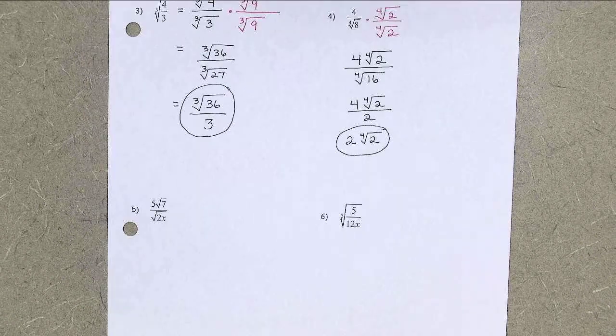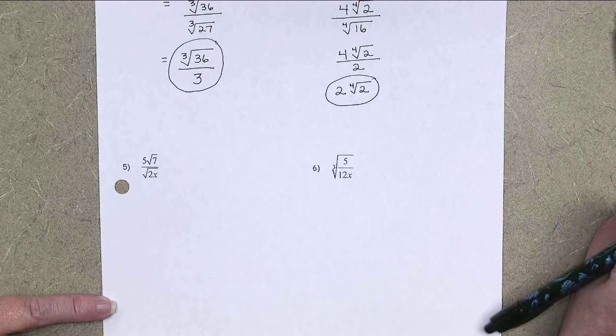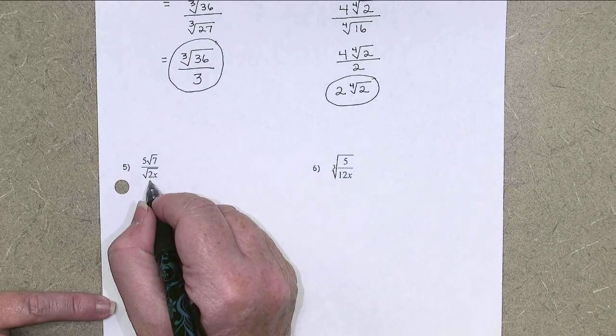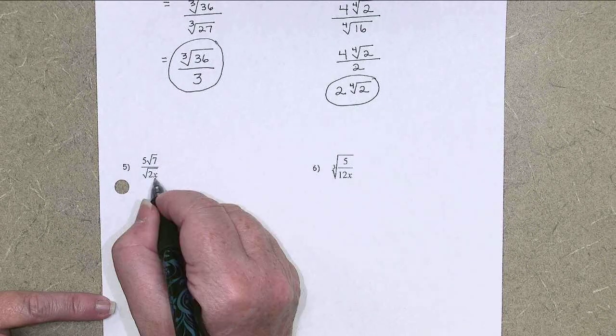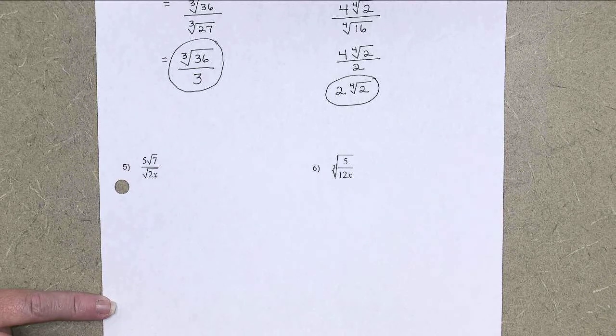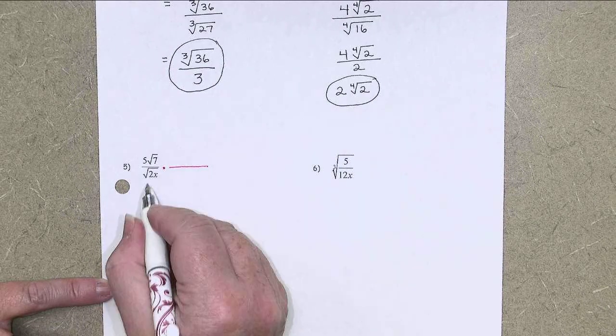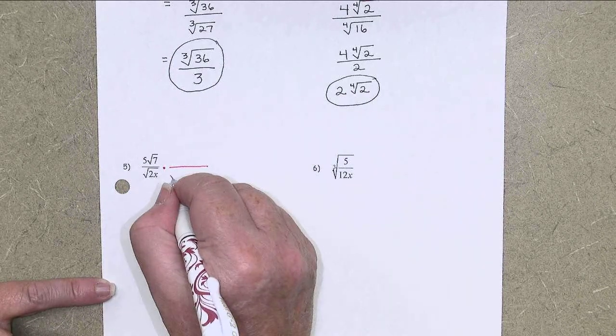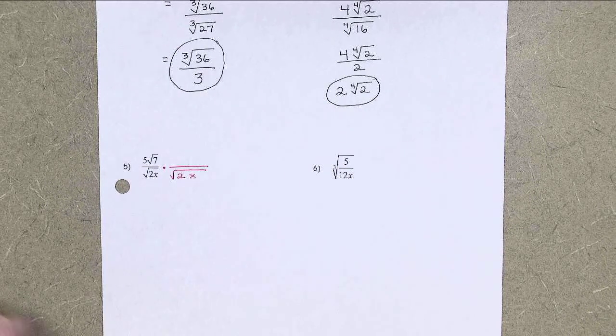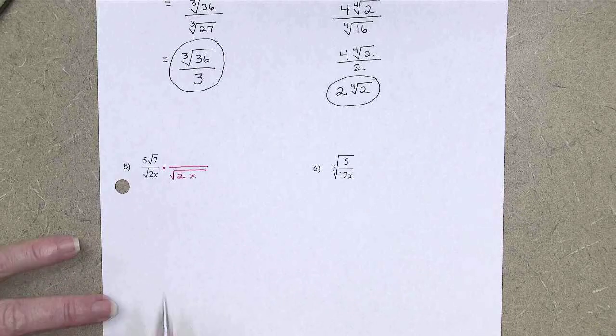Our last two examples are still going to be simplifying quotients, but with some variables in them. Looking at number 5, I have the 7 and the 2x. Nothing there that could be reduced under the radicals. So I'm going to start thinking about what could I multiply by right away. Well, 2 times 2 is 4. That's a good thing. And x times x is x squared, which also has a perfect square root. So let's just go ahead with the square root of 2x.